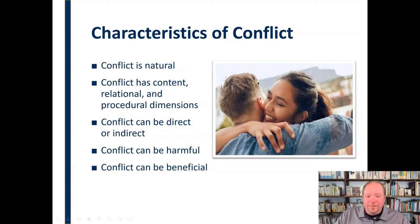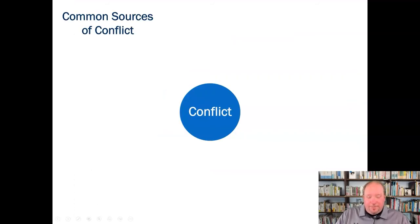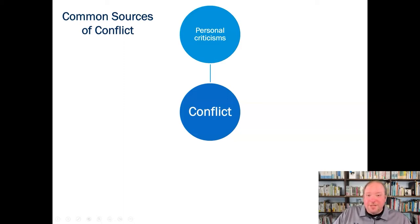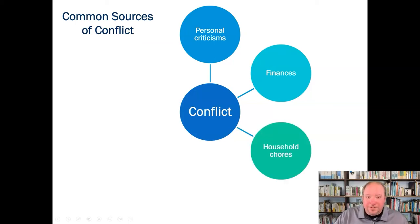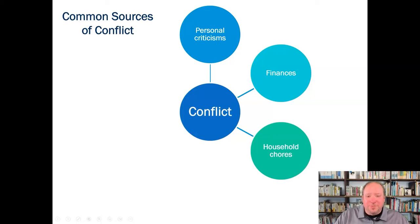The final thing I want to point to is what are some of the common sources of conflict — where does conflict come from? First, we have personal criticisms. Nobody likes to be criticized or judged on their personal attributes, so personal criticisms are probably the number one source of conflict. When somebody feels like they're being attacked, you're going to see conflict. Another top source is finances — people argue a lot about money. And the third major source, alongside personal criticisms and finances, is household chores: who's going to take care of what. There can be a lot of conflict stemming from trying to determine who's responsible for what, and a lot of miscommunication happens there.